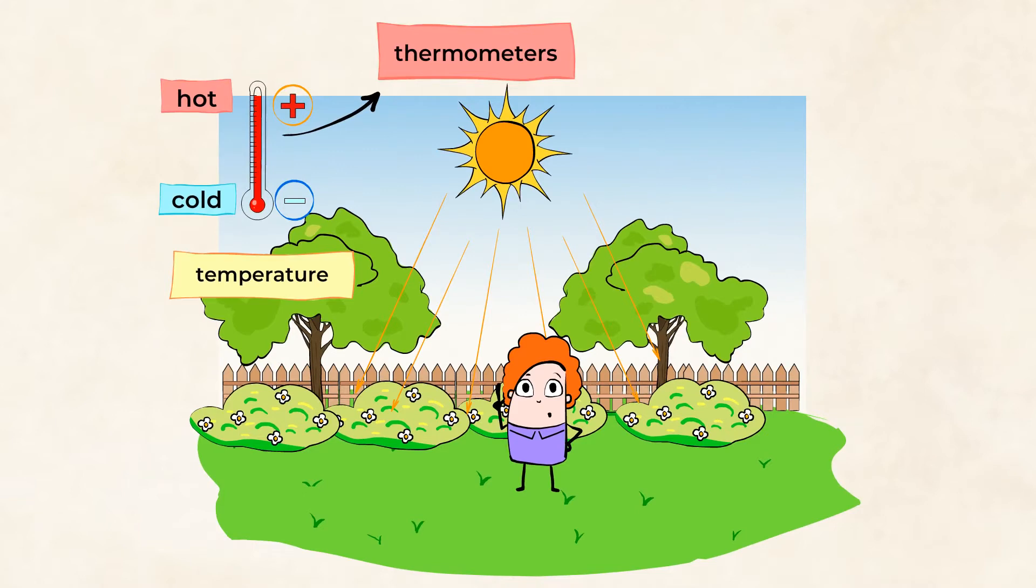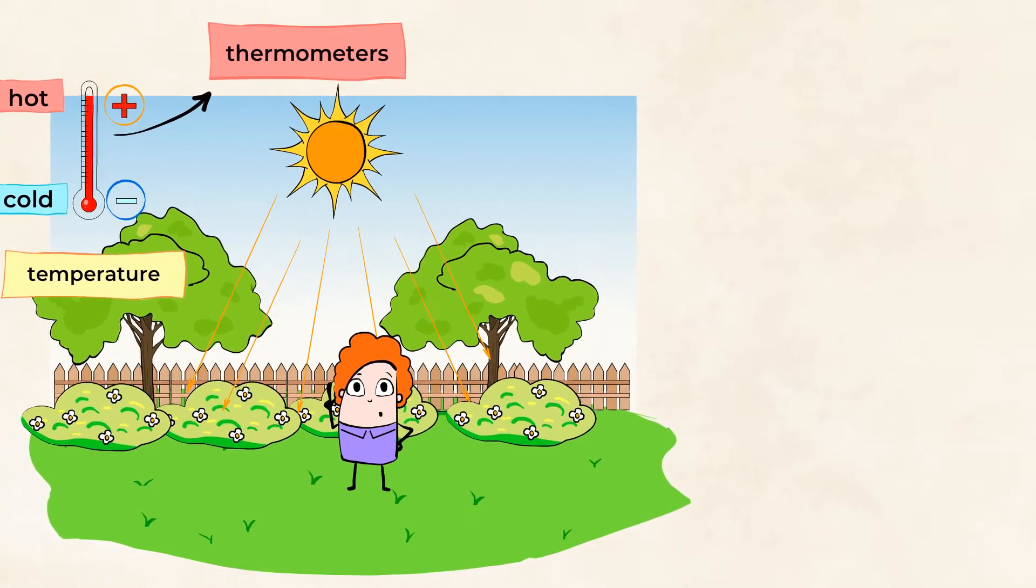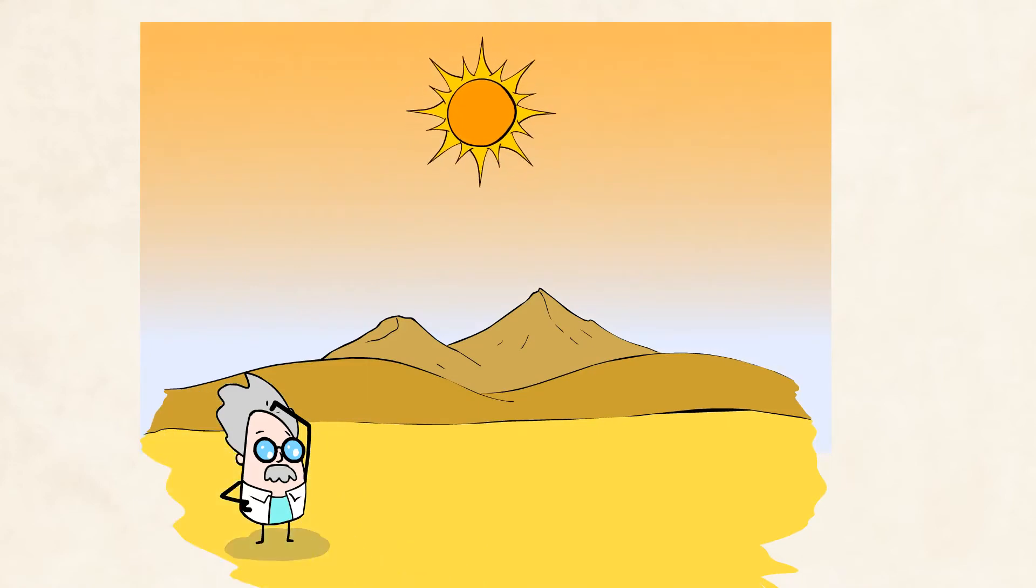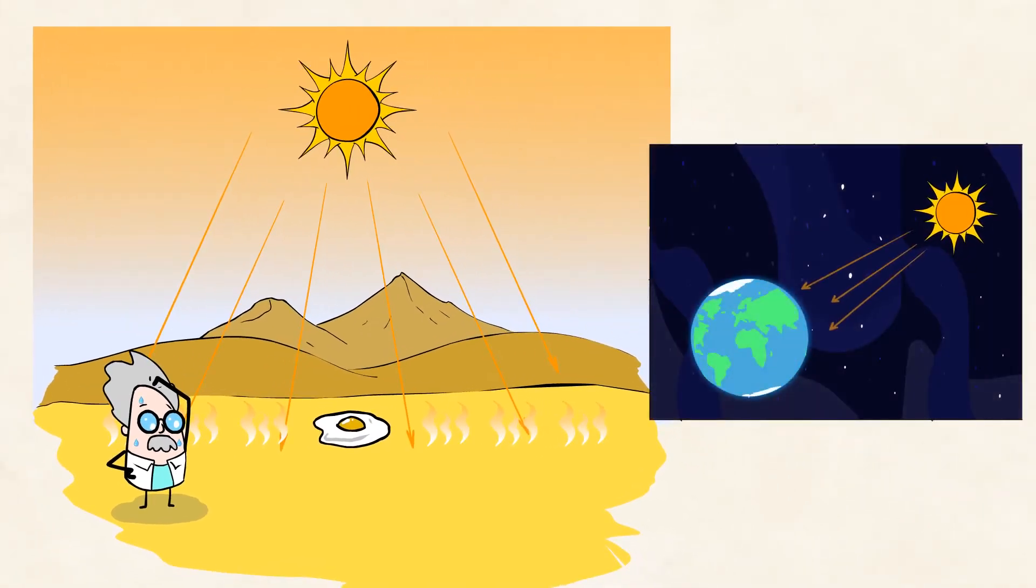Too much sun can lead to things getting too hot or burnt. In fact, in some places that get a lot of sunlight, such as a desert, it can get so hot that you can fry an egg on the ground. I would not want to walk barefoot there, that's for sure. And that's the effect of the sunlight. It warms the Earth.